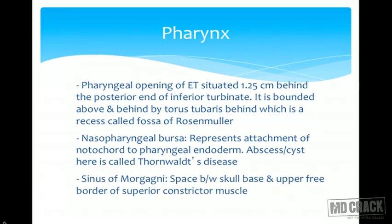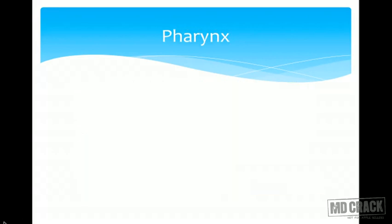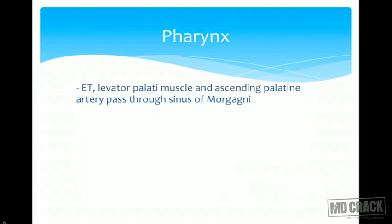The sinus of Morgagni is a space between the skull base and the upper free border of the superior constrictor muscle. The Eustachian tube, the levator veli palatini muscle, and the ascending palatine artery all pass through the sinus of Morgagni.